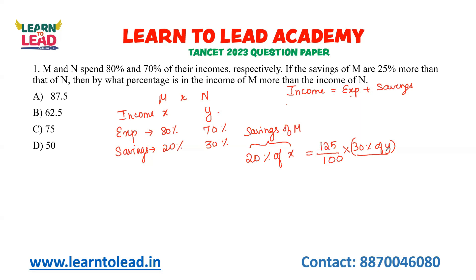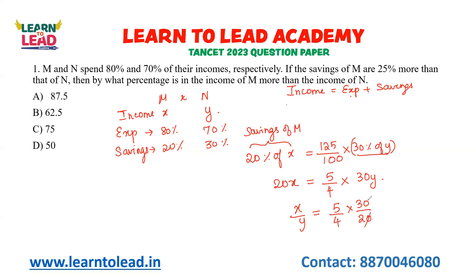Then, by what percentage is the income of M more than that of N? Now, X by Y is equal to 5 by 4 into 30% of Y. The zeros cancel out, giving us 5 times 3 equals 15, divided by 8. So the ratio X by Y is 15 by 8, meaning X has 15 parts.